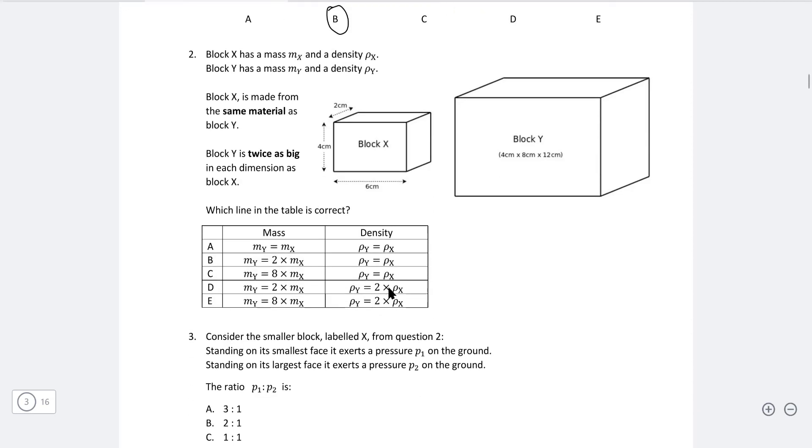Question two. Block X has a mass MX and a density given by rho X. Block Y, on the other hand, has mass MY and density rho Y. Block X is made from the same material as block Y. So this means they're going to have the same density.